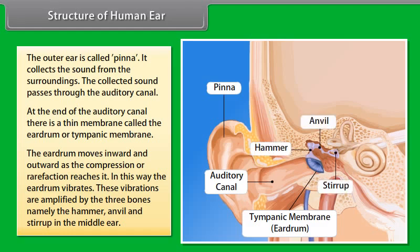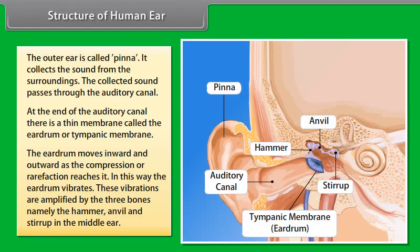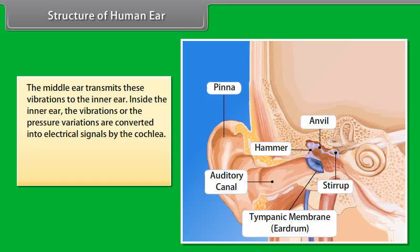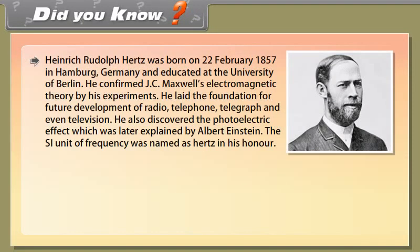Structure of human ear. The ear consists of three basic parts: the outer ear, the middle ear, and the inner ear. Each part of the ear has a specific role in the task of detecting and interpreting sound. The outer ear is called pinna. It collects the sound from the surroundings. The collected sound passes through the auditory canal. At the end of the auditory canal there is a thin membrane called the eardrum or tympanic membrane.